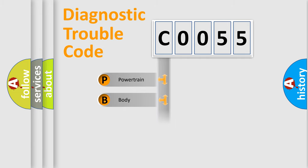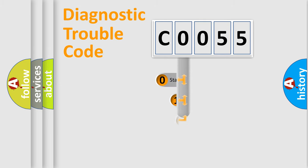Powertrain, Body, Chassis, Network. This distribution is defined in the first character code.